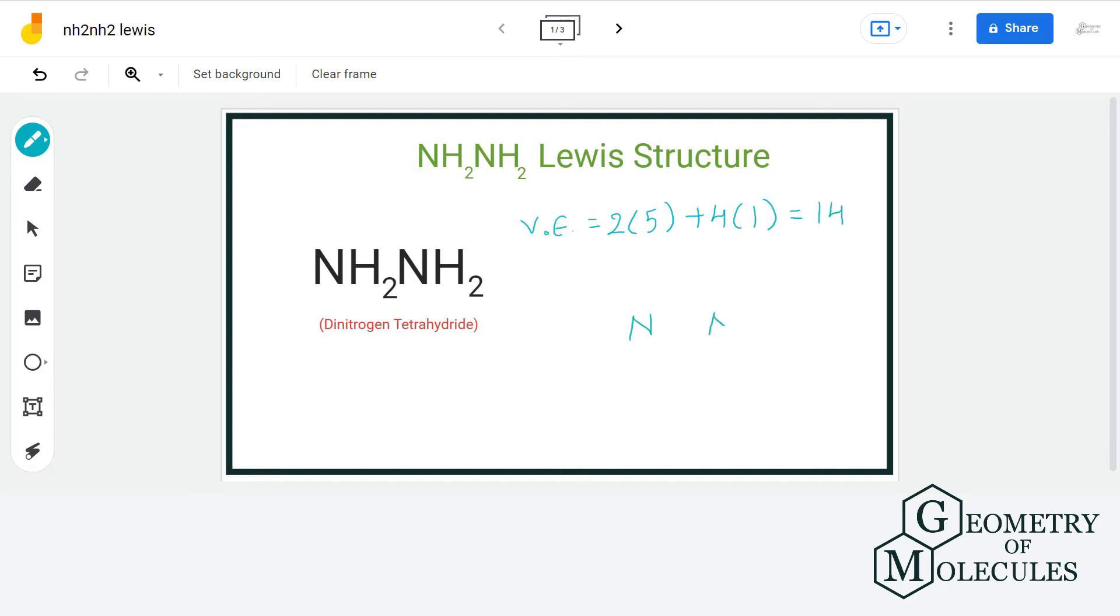For the arrangement of atoms, we will place nitrogen atoms adjacent to each other and attach 2 hydrogen atoms to each nitrogen atom. Then we will place electron pairs between each atom for bond formation.